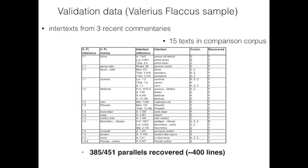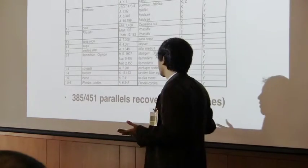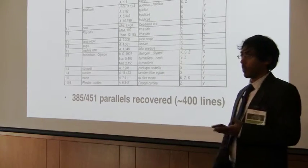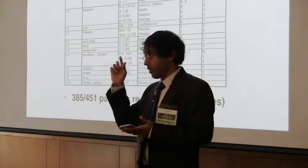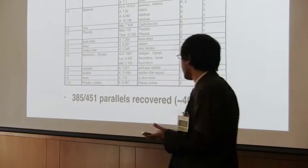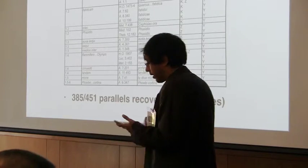We, like Tesserae, have ongoing work to systematically validate the method. We're using another Flavian poet, another first century AD poet called Valerius Flaccus, because there are three recent commentaries, which gives us a lot of conventional scholarship against which to measure the success rate of sequence alignment at recovering intertext. This is a snapshot of the kind of validation data that we have. You have the Valerius Flaccus reference, the intertext reference, the commentary in which the intertext is noted, and then a note on whether the intertext has been recovered or not. We have been very impressed with the success rate. So far, we've managed to recover 385 out of 451 parallels.